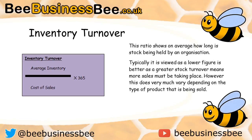Average inventory is calculated as opening inventory plus closing inventory, divided by two. That's how we calculate it — straightforward and simple once you get your head around it.